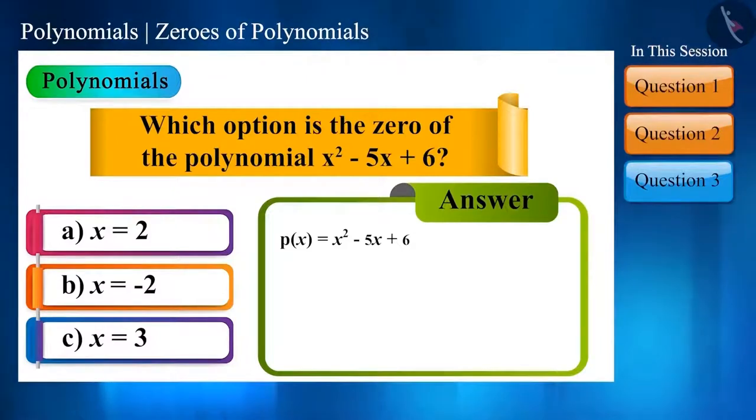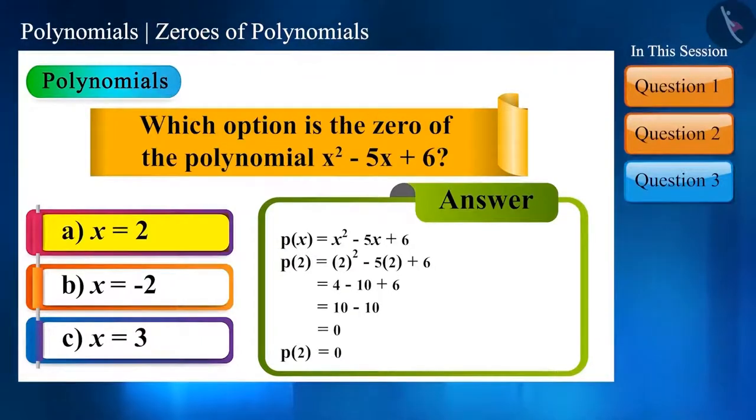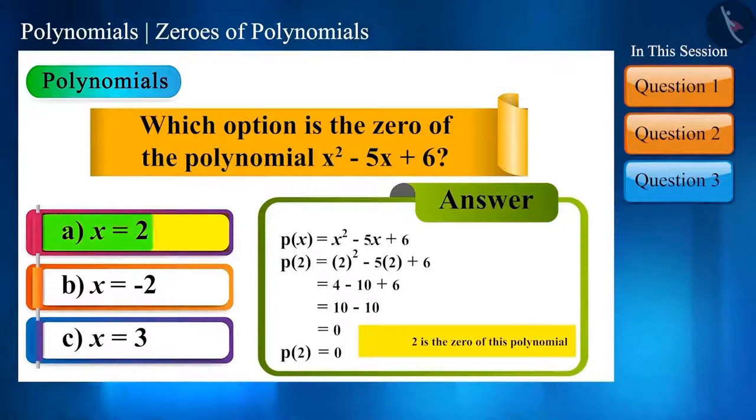From the first option, x = 2, we get the value of the polynomial as zero. So, 2 is the zero of this polynomial.